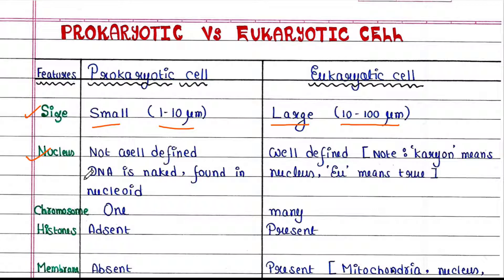Let's talk about the nucleus. In prokaryotic cells, the nucleus is actually not present. The DNA that is present in the cytosol is naked, and the place where DNA is found in the cytosol is called the nucleoid.